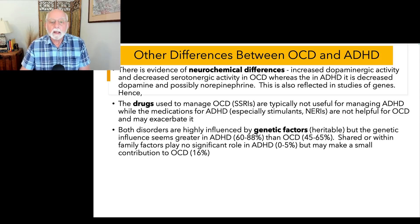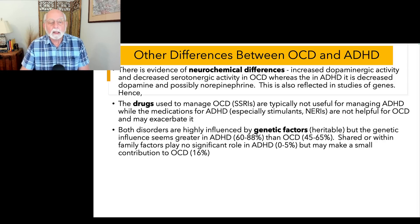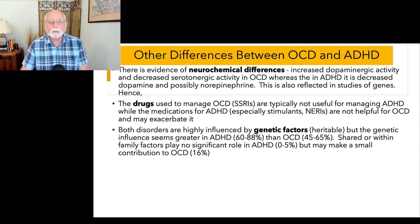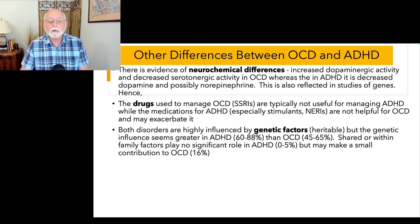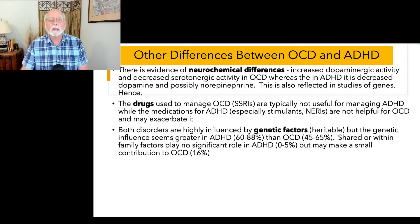Genetically, they differ to some extent. Both are quite heritable, meaning genetic influences account for the majority of variation in the disorders. In ADHD, about 60 to 88% of differences among individuals are due to genetic differences. In OCD, that figure is about a third to a half less — approximately 45 to 65% of variation in OCD severity is attributable to genetic factors.